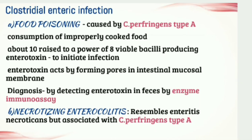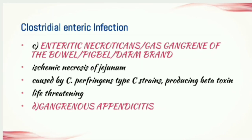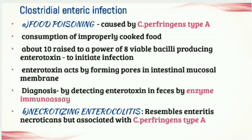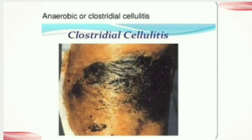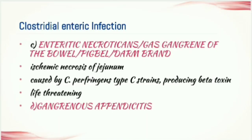The second Clostridial enteric infection is enteritis necroticans — also known as gas gangrene of the bowel, pigbel, or dambrand. It is a life-threatening condition characterized by ischemic necrosis of the jejunum and gas in the tissue plane, caused by Clostridium perfringens type C. The third is necrotizing enterocolitis, resembling enteritis necroticans but associated with type A, where the intestinal wall is invaded by bacteria causing local infection and inflammation. The fourth is gangrenous appendicitis.